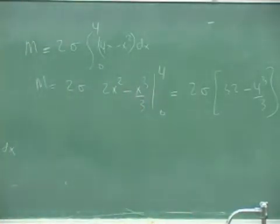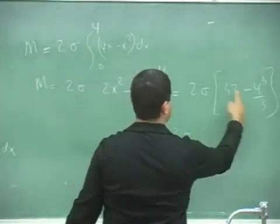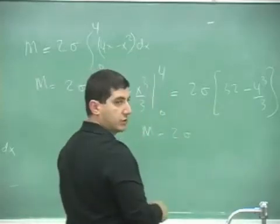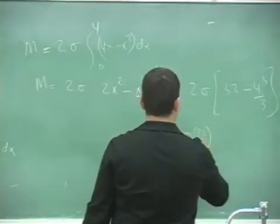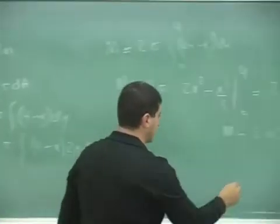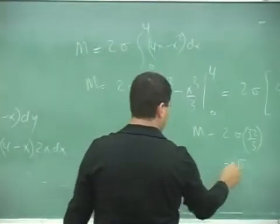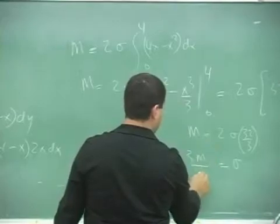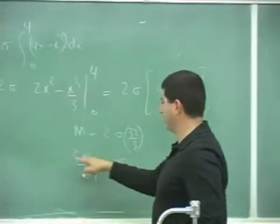So that one, the reason we do that is so that we can know the relationship between sigma and m, what is the mass density and the mass. So we have here m equals 2 sigma, what is that, 96 minus 64 is 32 over 3. So now we can substitute here, we can say sigma is equal to 3m over 64.